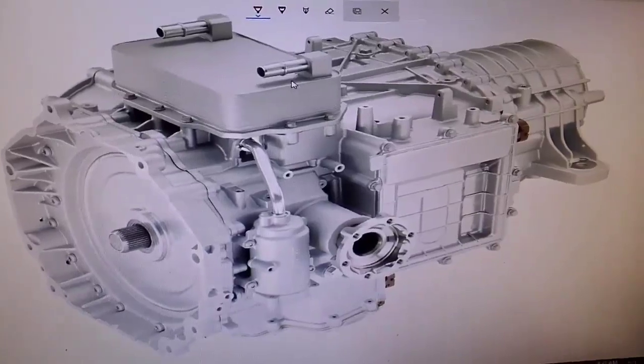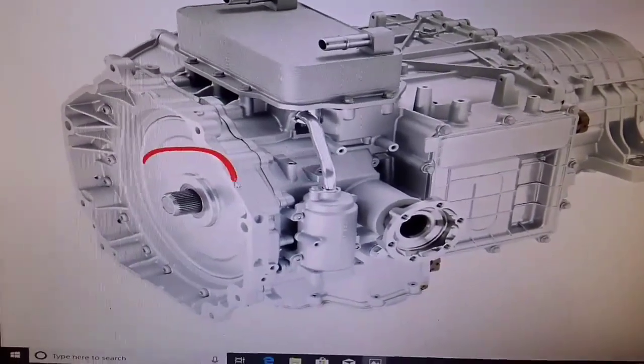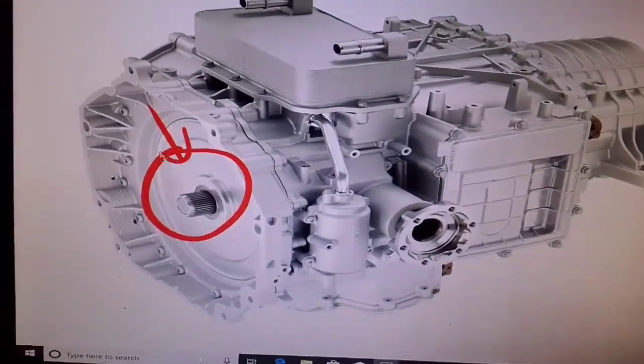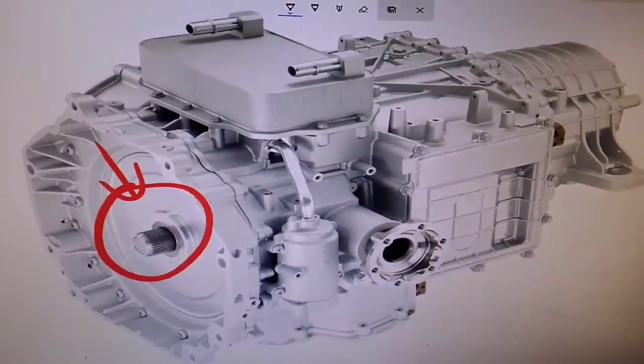Alright, so now let's start over here with the input shaft, right here. Now, obviously, this is where the actual torque converter would go if it was an automatic.